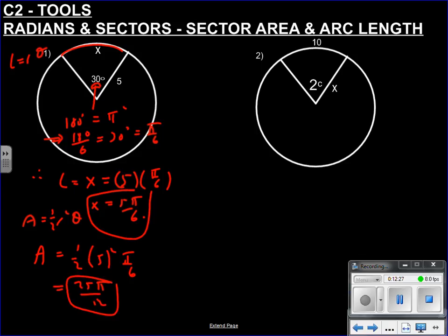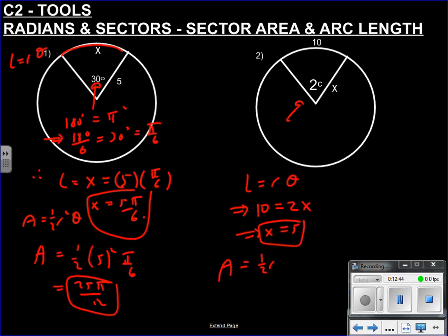In another example, radians are given as 2 and the arc length is 10. Since arc length = rθ, we have 10 = x × 2, so x = 5. For the area: ½r²θ = ½ × x² × 2 = ½ × 25 × 2 = 25 square units. Really nice and easy. We're done.